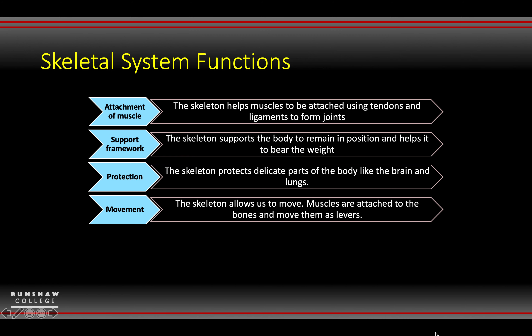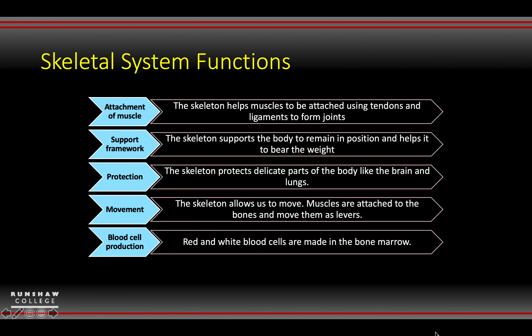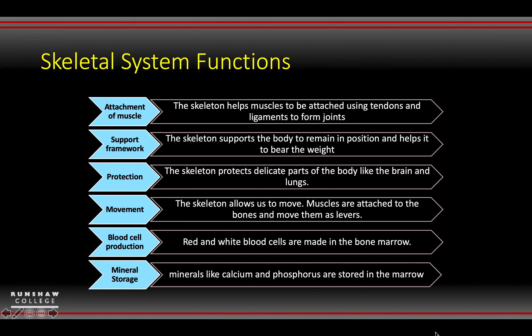Movement: the muscles work by contracting and they pull the bones, working them as levers. And blood cell production — inside our bones, as we've already covered, we've got the medullary cavity and that helps to build bone marrow. And lastly, mineral storage — things like calcium and phosphorus are stored in the bone marrow.